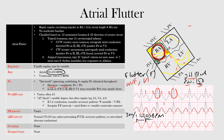With a 2:1 block: atrial rate 300, ventricular rate 150. With a 3:1 block: atrial rate 300, ventricular rate 100 beats per minute. With a 4:1 block: atrial rate 300, ventricular rate 75 beats per minute.